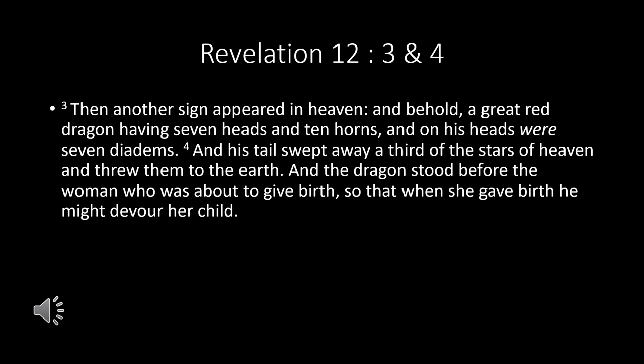Revelation 12:3-4: 'Then another sign appeared in heaven — and behold, a great red dragon, having seven heads and ten horns, and on his heads were seven diadems. And his tail swept away a third of the stars of heaven and threw them to the earth. And the dragon stood before the woman who was about to give birth, so that when she gave birth, he might devour the child.'